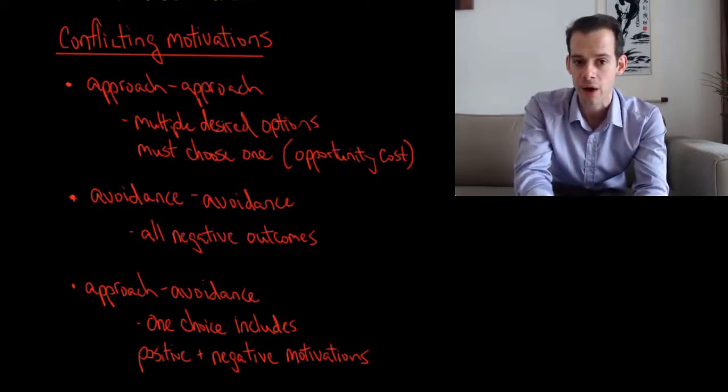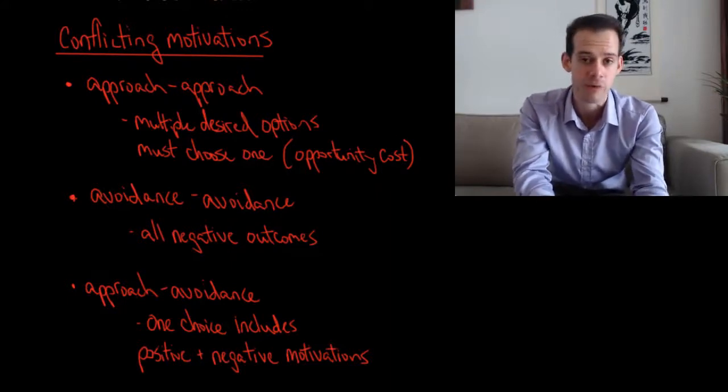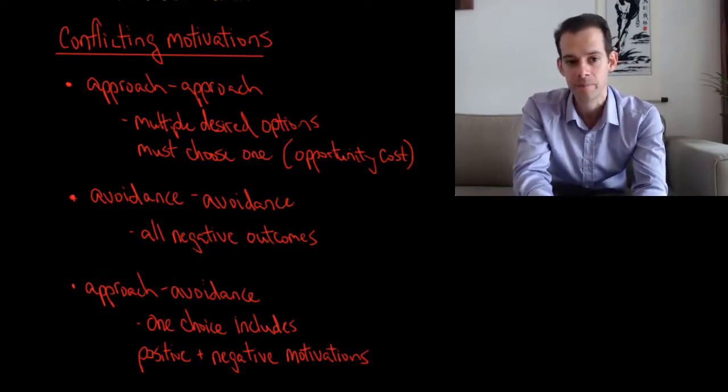This would be an approach-approach conflict. You have multiple things that you want, but you can only choose one of them. In economic terms, we might refer to this as the opportunity cost of seeing one of the movies is that you can't see the other two movies. It costs you something to see that.